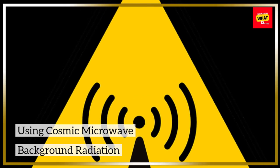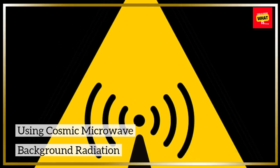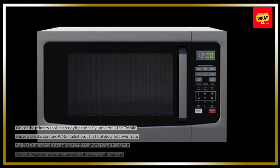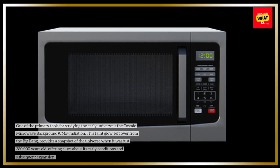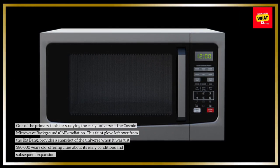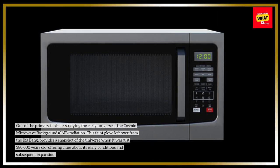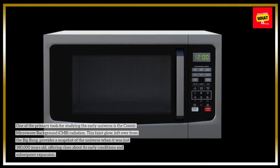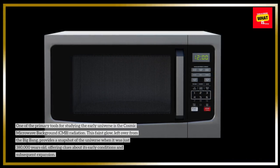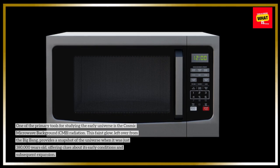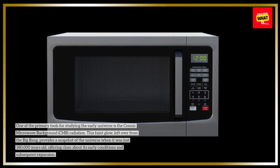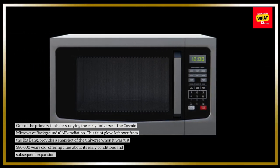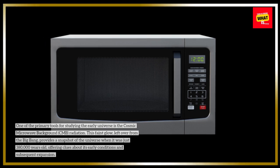One of the primary tools for studying the early universe is the Cosmic Microwave Background radiation. This faint glow, left over from the Big Bang, provides a snapshot of the universe when it was just 380,000 years old, offering clues about its early conditions and subsequent expansion.